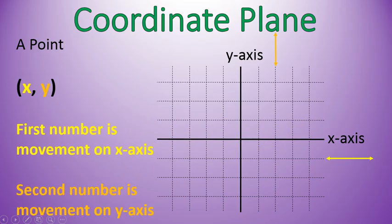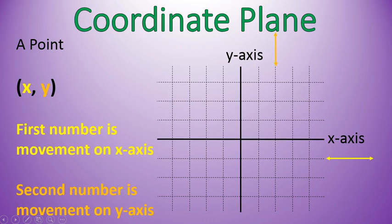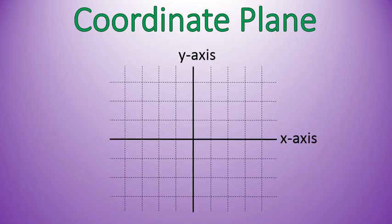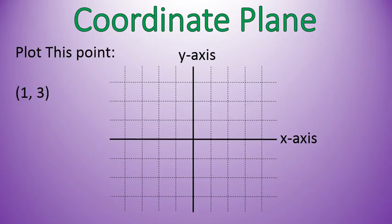The second number is your y-coordinate. Whatever number is in that position, we call it your y-coordinate, and that's how it moves up or down. Now you're not going to see the letters x and y a lot in there — instead you're going to see numbers. So let's go ahead and work with a number.